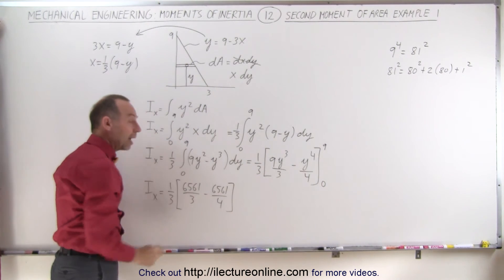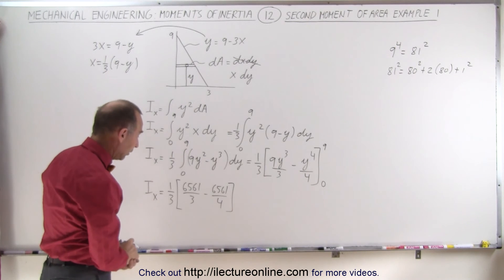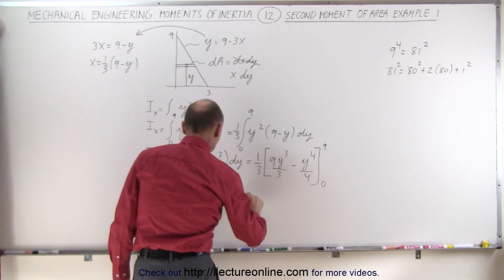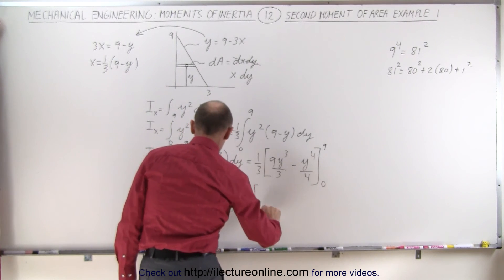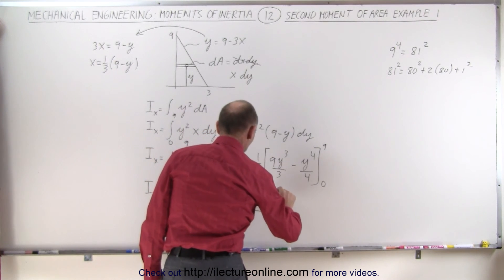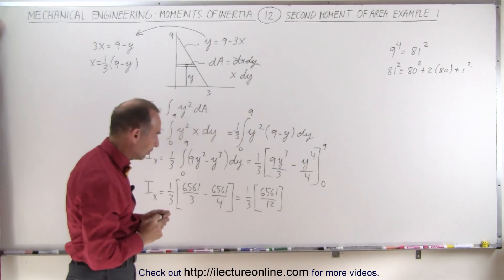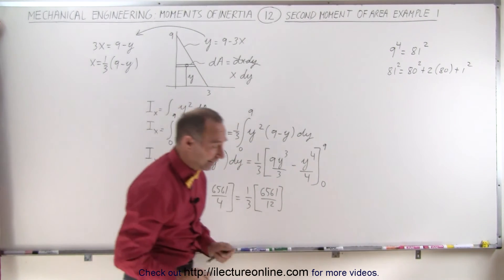So we get 6561 divided by 3 minus 6561 divided by 4. Now since the common denominator is 12 and the difference here is 1 in the denominators, this simplifies to one third times 6561 divided by 12, or 6561 divided by 36. Now for that I need a calculator.